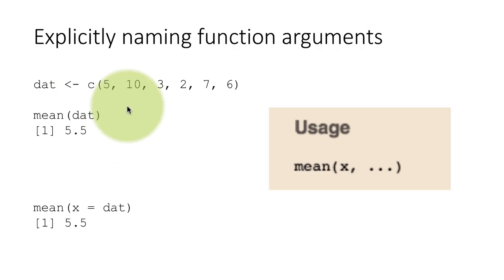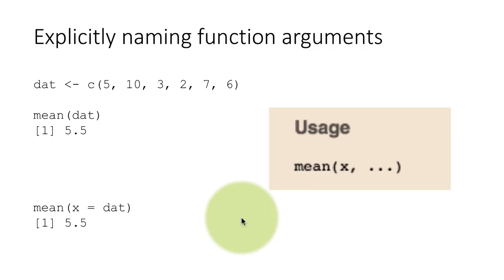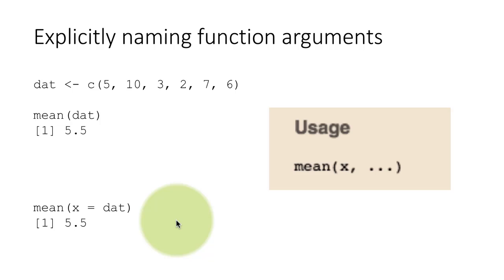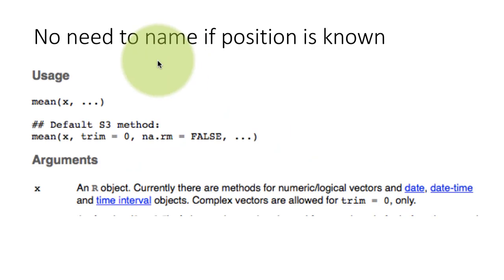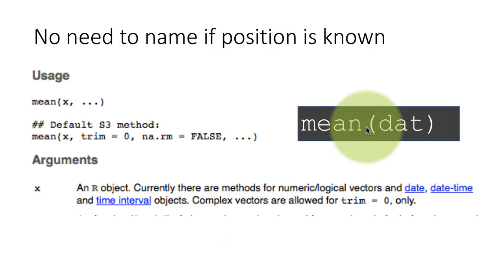Here we are using the positional way of calling this function — passing dat in the first position, and the first argument is x, so it maps to x. And here we are doing the named way of giving the argument: x equals dat. We are saying take this value dat and use it for the argument named x. Both are correct and will work. If the position is known, there's really no need to name it — you can still name it, there's nothing wrong with that, but it's not necessary.